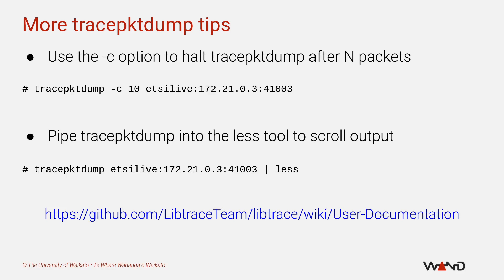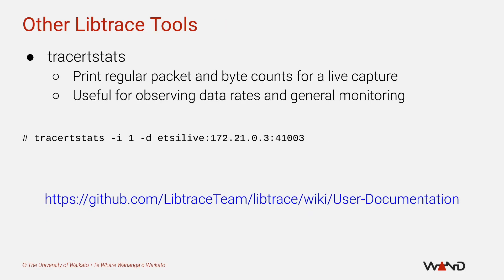You can also redirect the trace_packet_dump output to a file for a more permanent alternative that you can examine with your preferred paging or editing tool. For situations where you care less about the specific contents of intercepted traffic and more about the rate at which traffic is being intercepted, there is a tool called trace_rt_stats which will regularly print packet and byte counts for a live capture format, including an ETSI handover. Useful command line arguments include the -i option, which sets the frequency at which counters are displayed in seconds, and the -d option, which enables display of counters for dropped and missing packets. Full documentation for all libtrace tools can be found at the link shown on the slide.